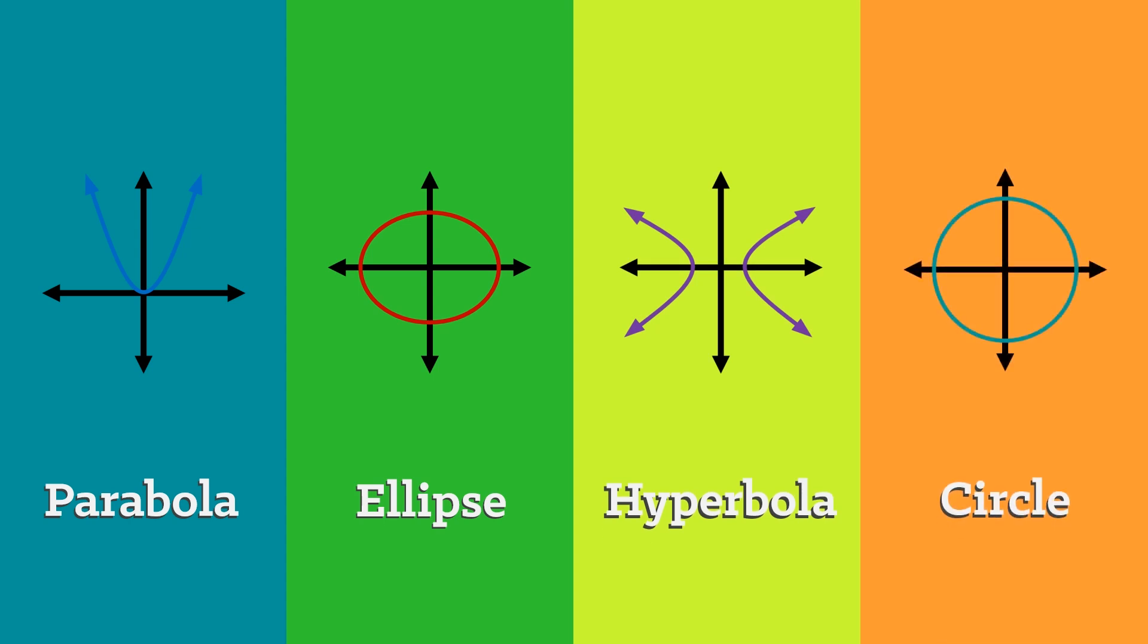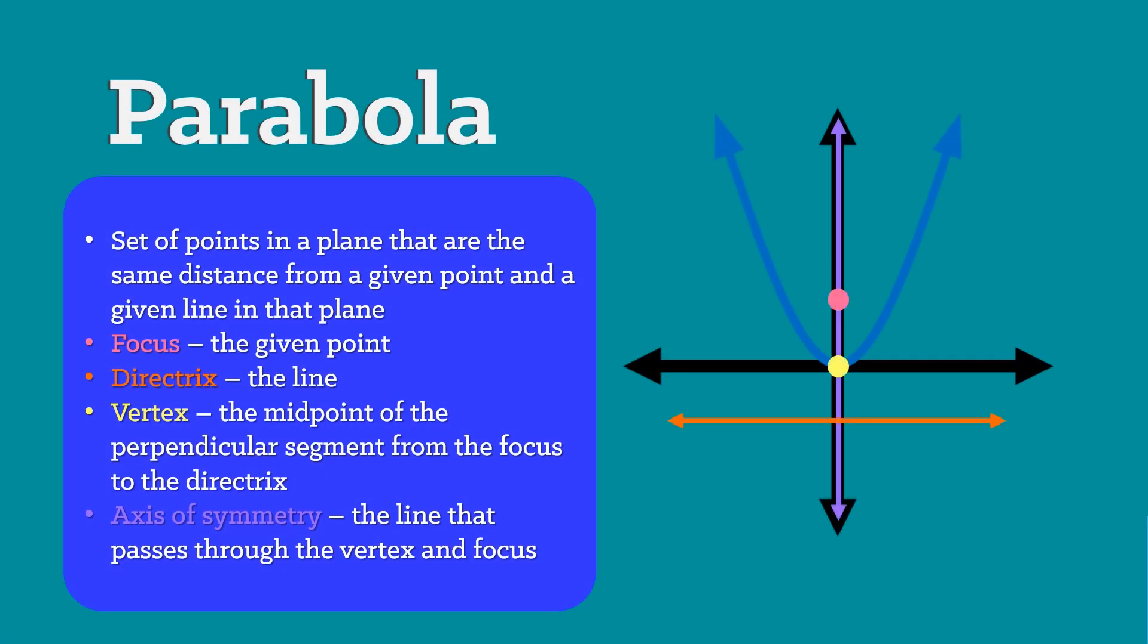The four types are parabola, ellipse, hyperbola, and circle. Let's move to the first conic section, the parabola.